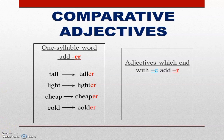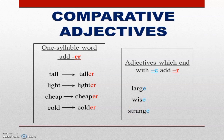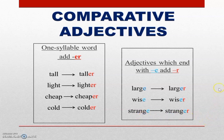There are some adjective words that end with E. You need to add only R. For example, the word large — the last letter is E. Wise — again, the last letter is E. And strange — again, the last letter is E. So when you see adjectives that end with E, you need to add R. So large becomes larger, wise becomes wiser, and strange becomes stranger.